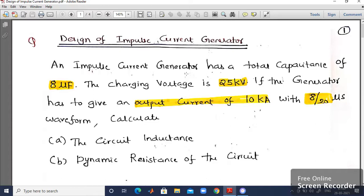An impulse current generator has a total capacitance of 8µF. The charging voltage is 25kV. If the generator has to give an output current of 10kA with 8/20 microsecond waveform, calculate the following: Number 1, the circuit inductance and Number 2, dynamic resistance of the circuit.